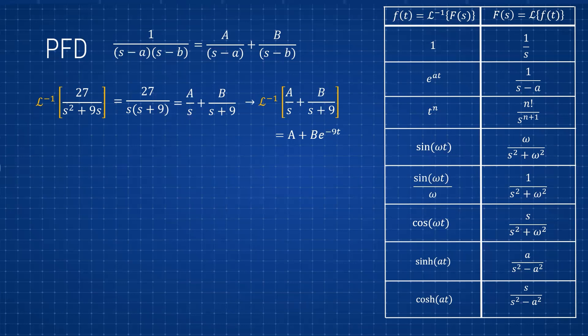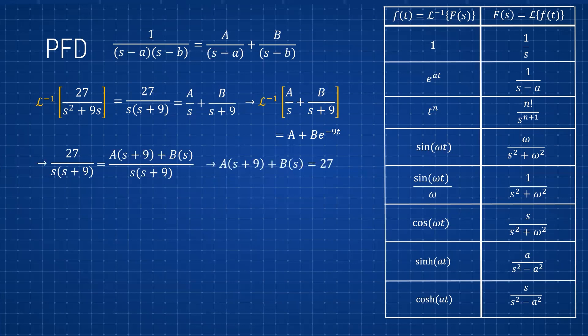We already know how our answer should look. Now let's solve for A and B. Starting from 27 over s(s+9), we combine the fractions on the right by cross-multiplying, giving us A(s+9) plus B·s over s(s+9). Since the denominators are the same, we can equate the numerators: A(s+9) + Bs = 27.